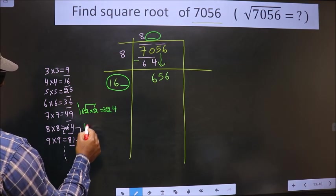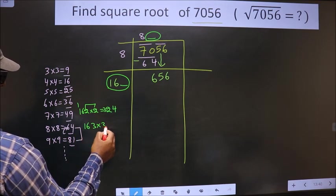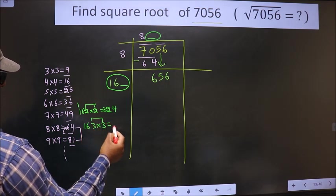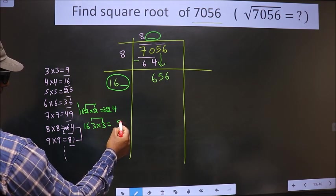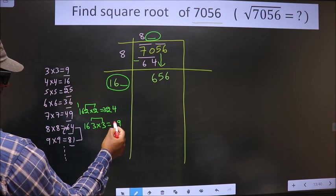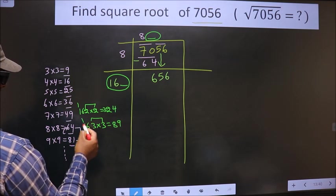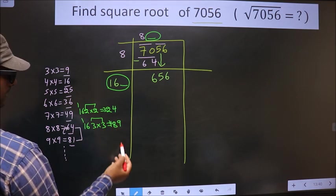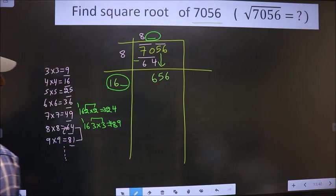If I take 3. These two numbers should be same. 3 into 3 is 9. 3 into 6 is 18. 3 once 3 and 4 is 489. So this is also far from this.